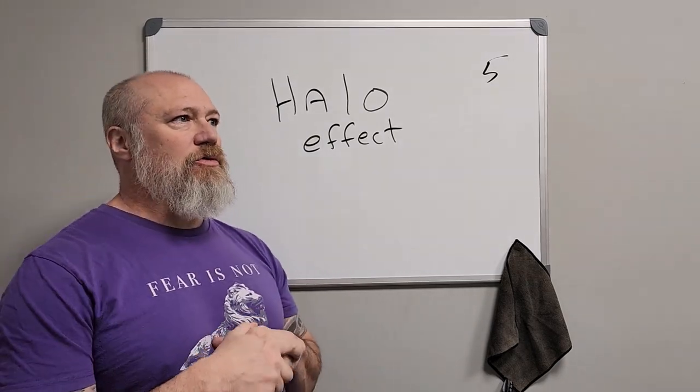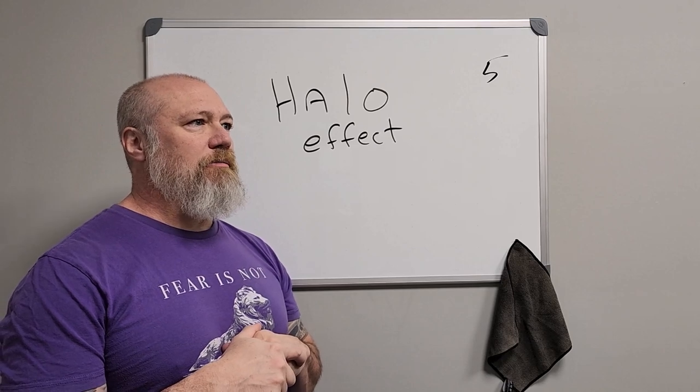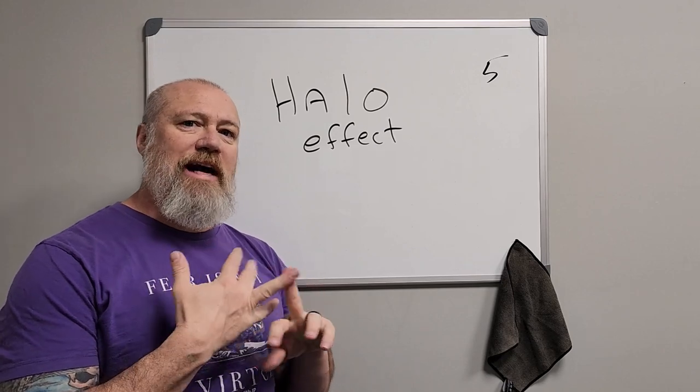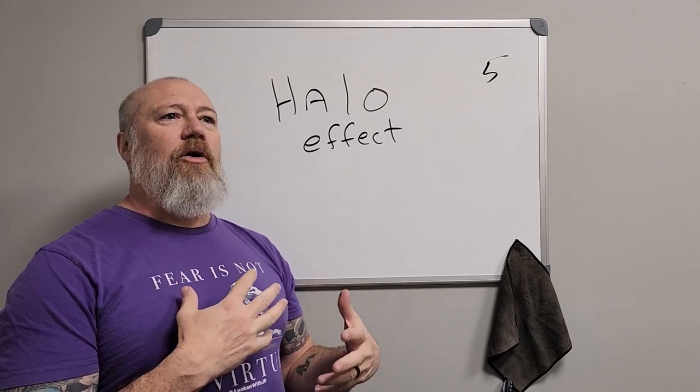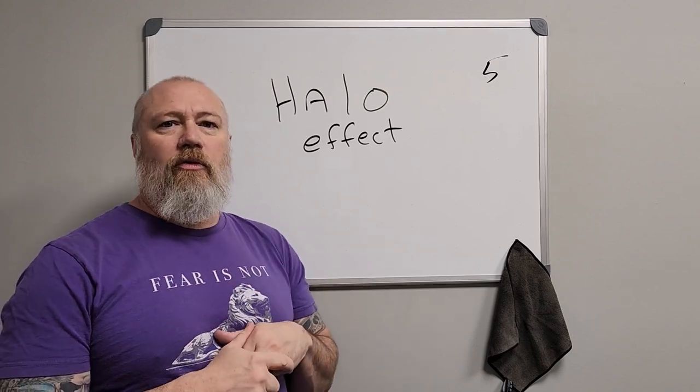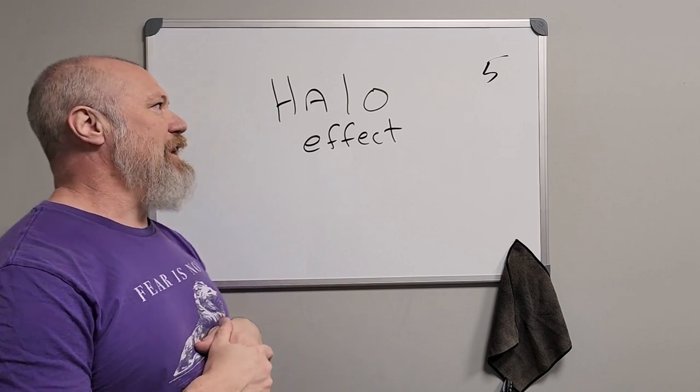This one is when you judge based on how much you like someone or how attractive you find that person. The other person will determine how readily you accept their argument or believe them. It's called the halo effect.